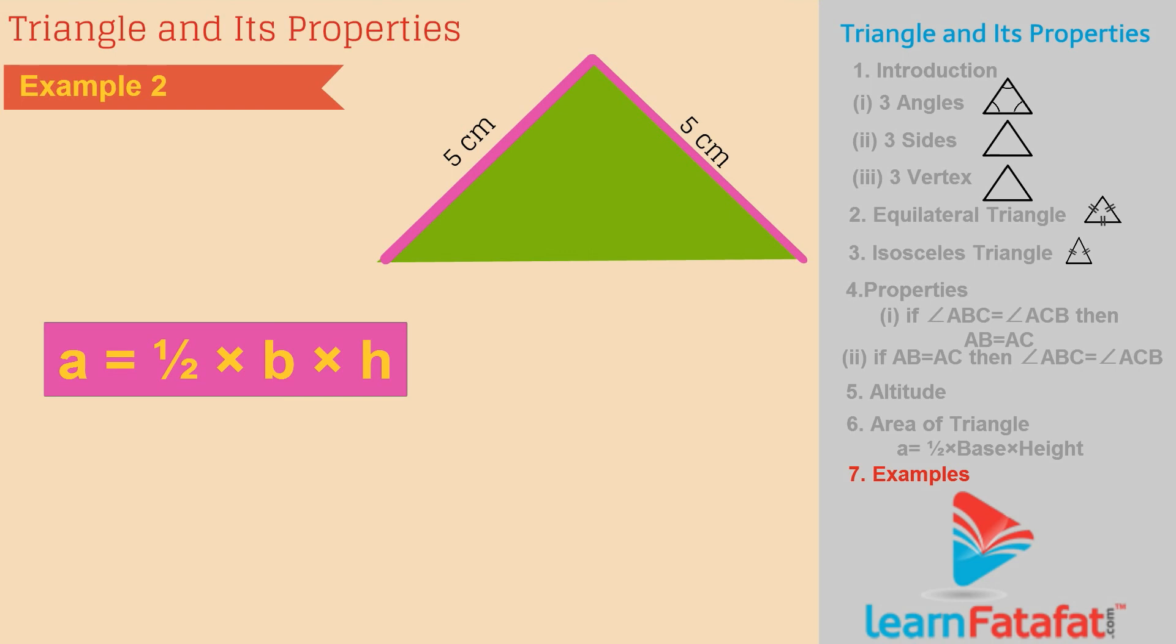Example 2. Here, base is 6 cm and height, that is altitude, is 4 cm. So area is equal to 12 cm square.